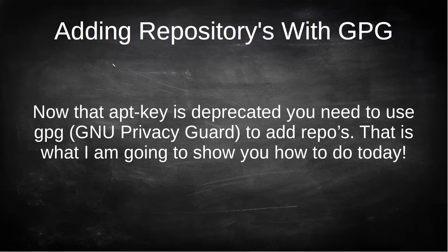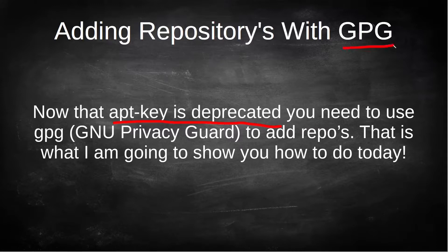Hey, what's up guys? This is Baradenix here. One thing that you may have noticed is that APT key is deprecated, and that's probably why a lot of you guys are having a hard time actually adding repositories to Debian distributions like Ubuntu, Mint, Pop! OS. So what I'm actually going to show you is how to add repository keys with GPG instead.